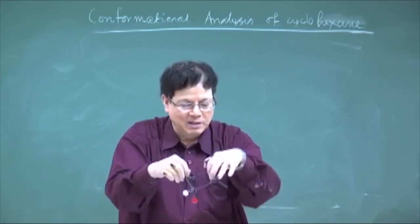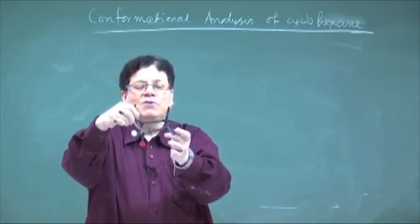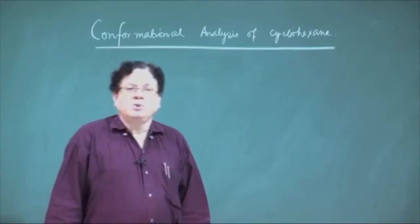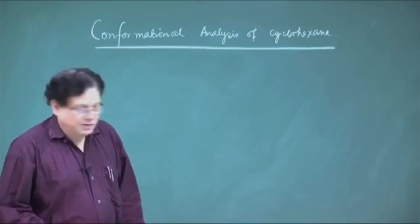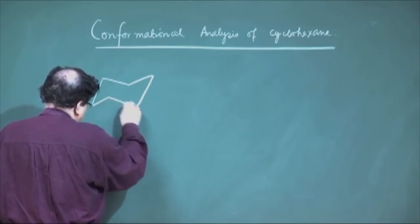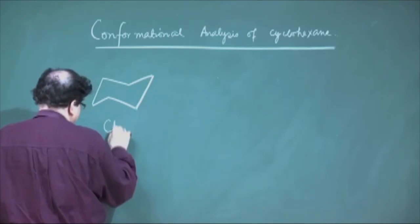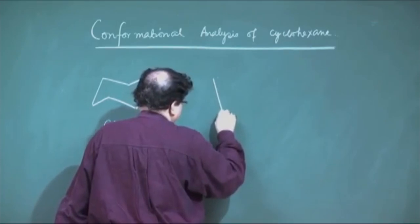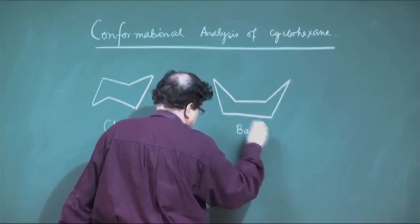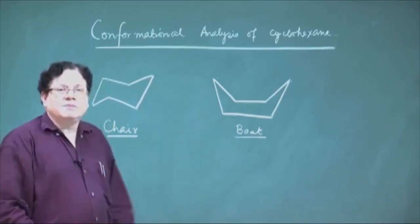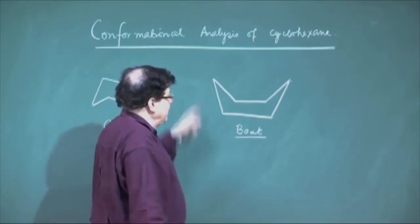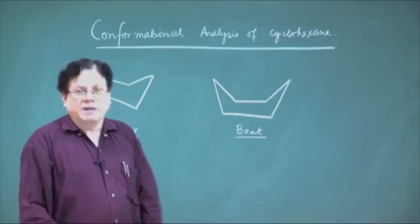The molecule is very flexible, which is why it is easy to get to these conformations. This is the chair conformation and this is the boat conformation. Between these two, it has been found that cyclohexane exists mostly in the chair conformation; there are reasons why the boat conformation is quite unstable, which we can discuss later.